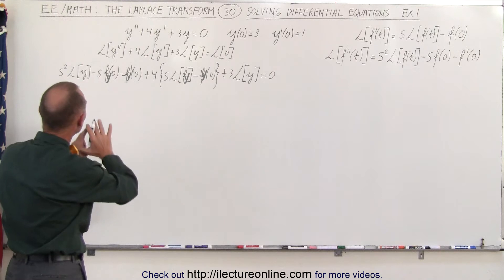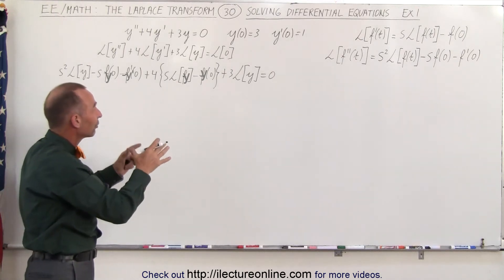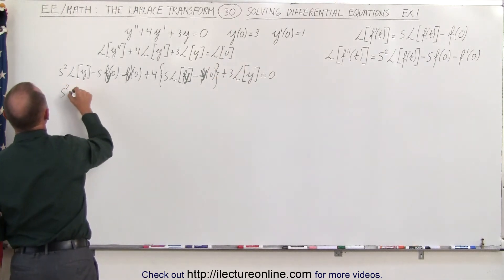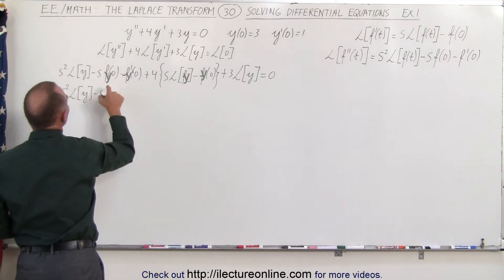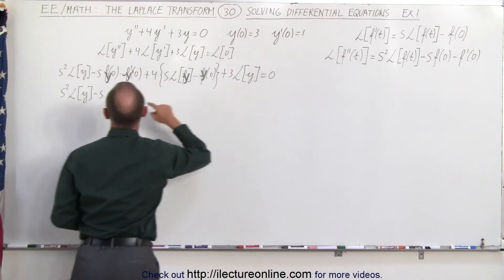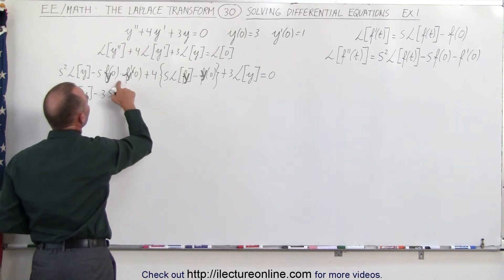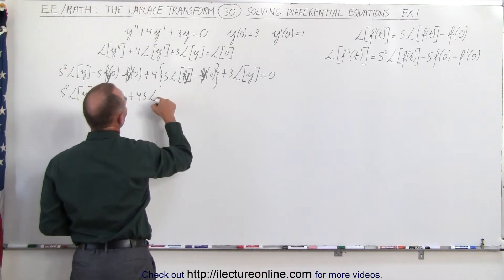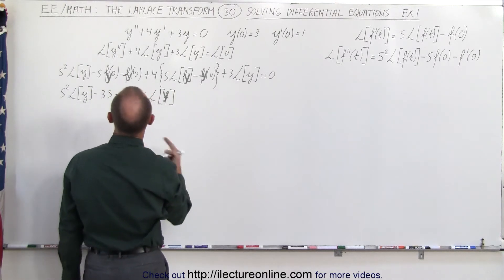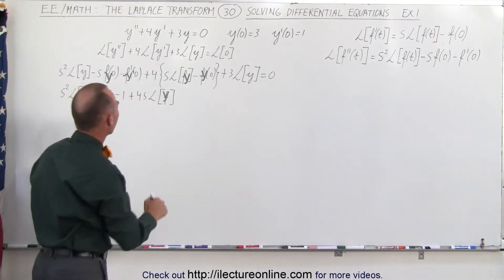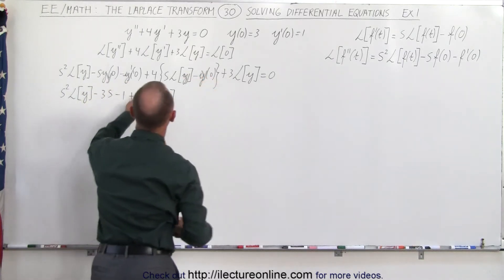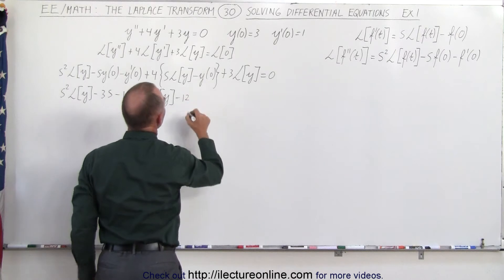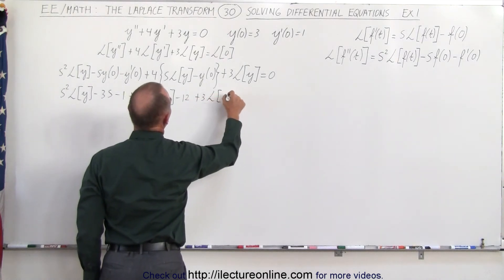Now let's clean this up. We want to solve this equation for the Laplace transform of y. Before we do that, let's plug in the initial conditions. So we have s squared times the Laplace transform of y minus s times y(0), which is three — so that's minus 3s — minus y'(0), which is one, so minus one. Plus four times s times the Laplace transform of y, minus four times y(0) which is three, giving minus 12. And plus three times the Laplace transform of y, equals zero.